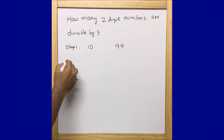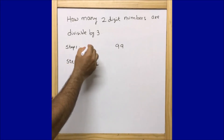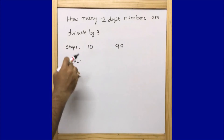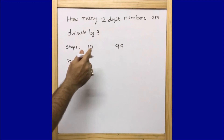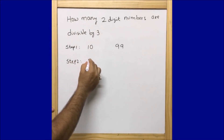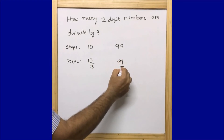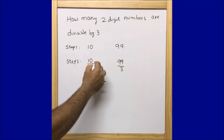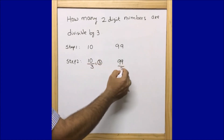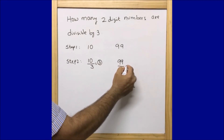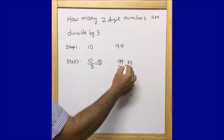Step two: we are going to divide this lowest two-digit number and the highest two-digit number by three, because as per the question they have asked us to find how many two-digit numbers are divisible by three. So we divide 10 by 3 — I get 3 in the quotient and 1 as the remainder, so I ignore the remainder. And for 99 divided by 3, I get 33.